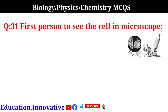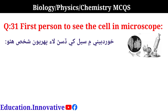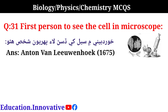Question 31: Who is the first person to see the cell in a microscope? The correct answer was Anton Leeuwenhoek.